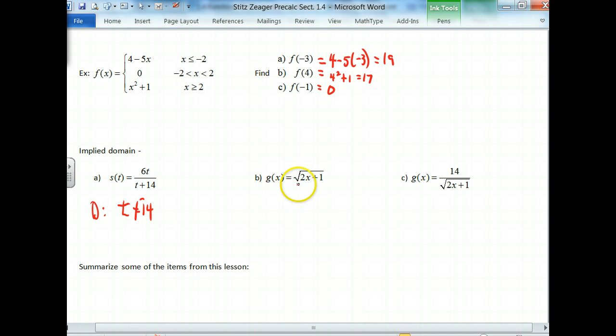For this one here, when we look at this square root, we cannot take the square root of a negative. So everything has to be positive. So in other words, 2x plus 1 has to be greater than 0. Could it be equal to 0? Can we take the square root of 0? Yes. So I use the equal sign when this is in the numerator. So if I solve this out, 2x is greater than or equal to negative 1. So x is greater than or equal to negative 1 half. So that would be my domain for this function here.